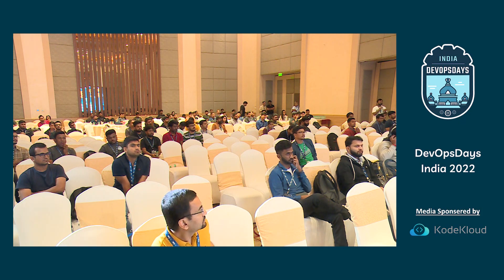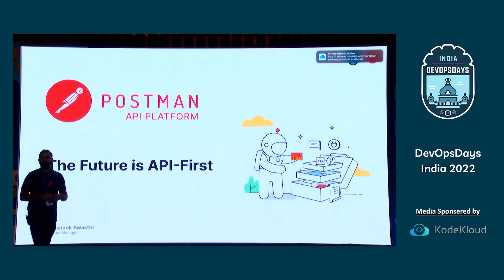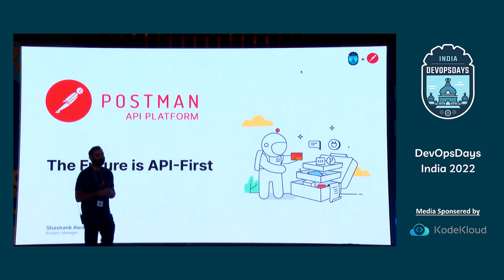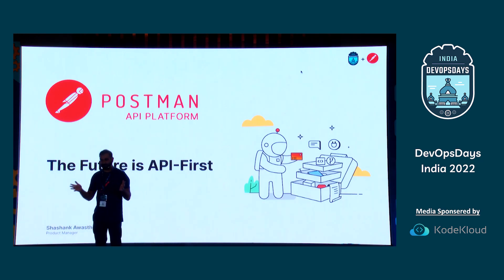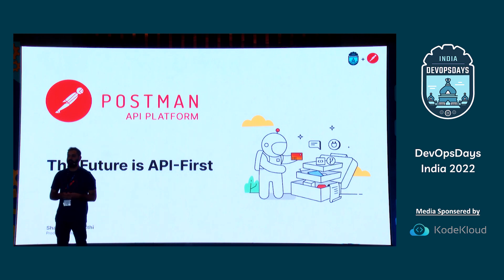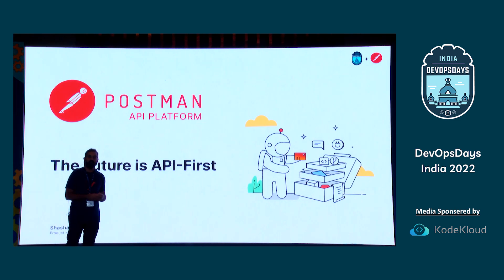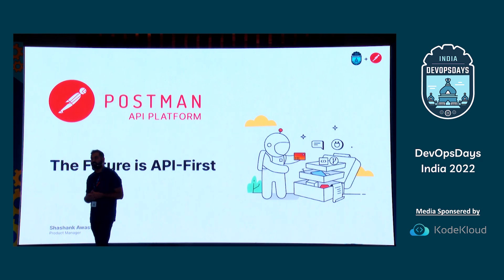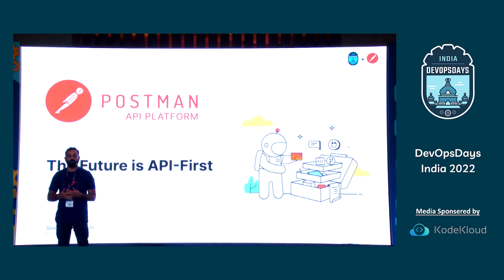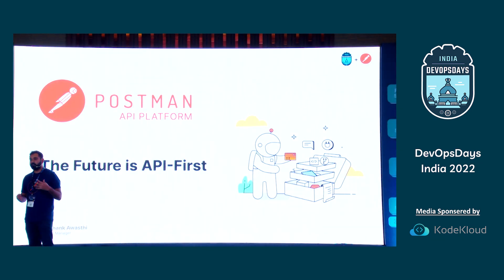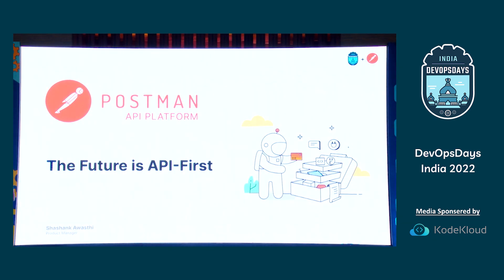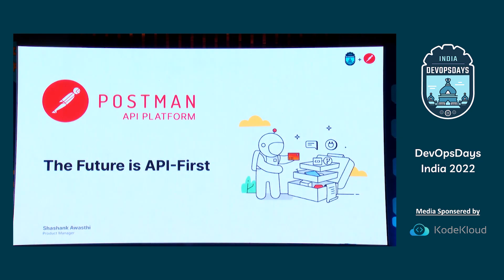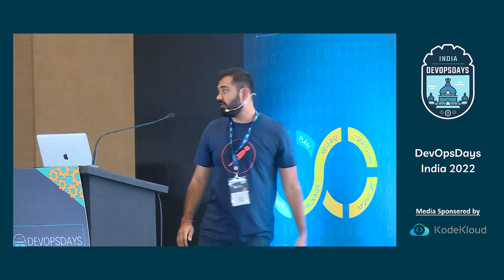Up next we have Postman. How many of you already use Postman? That is what I was expecting — the majority of your hands are up. We are Postman, one of the leading API platforms out there. We already have 22 million plus signed-in users who are actively using the product day in and day out. Our vision is to create a 100 million plus developer and builder community.